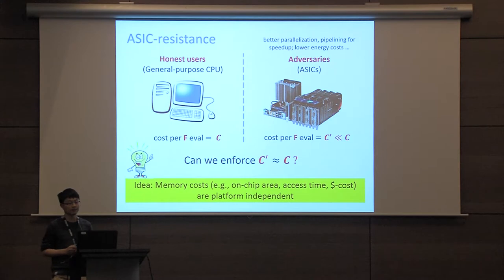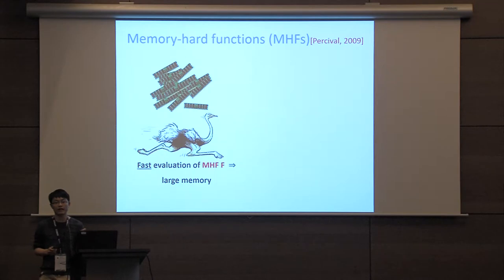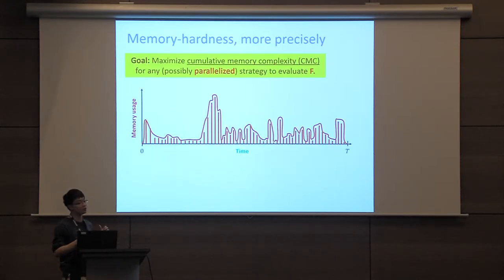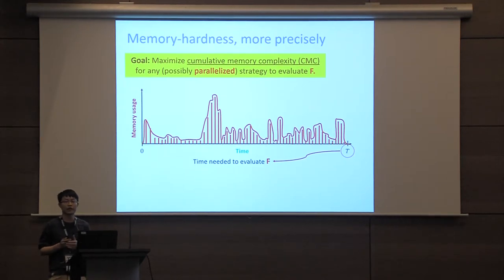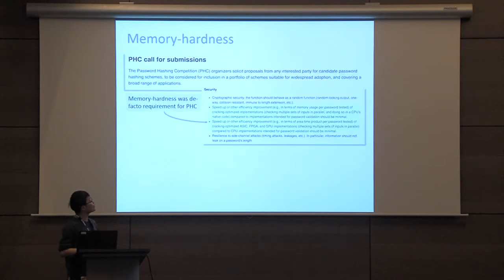To achieve this, many recent designs have exploited the observation that memory costs are largely platform independent. This has particularly led to a notion called memory hard function, or MHF for short. A memory hard function F requires large memory to be evaluated in a reasonably fast way. However, with small memory the evaluation takes much longer. Our goal is to maximize cumulative memory complexity, or CMC for short, for any possibly parallelized strategy to evaluate F.